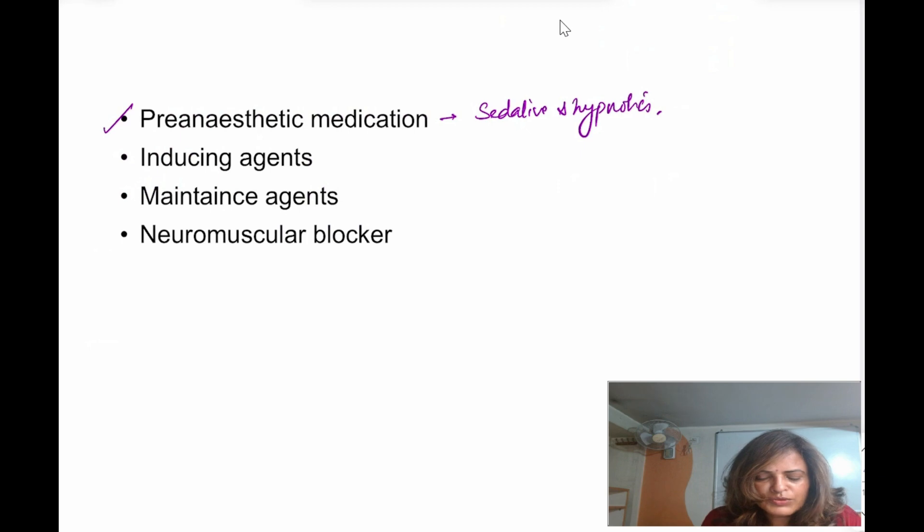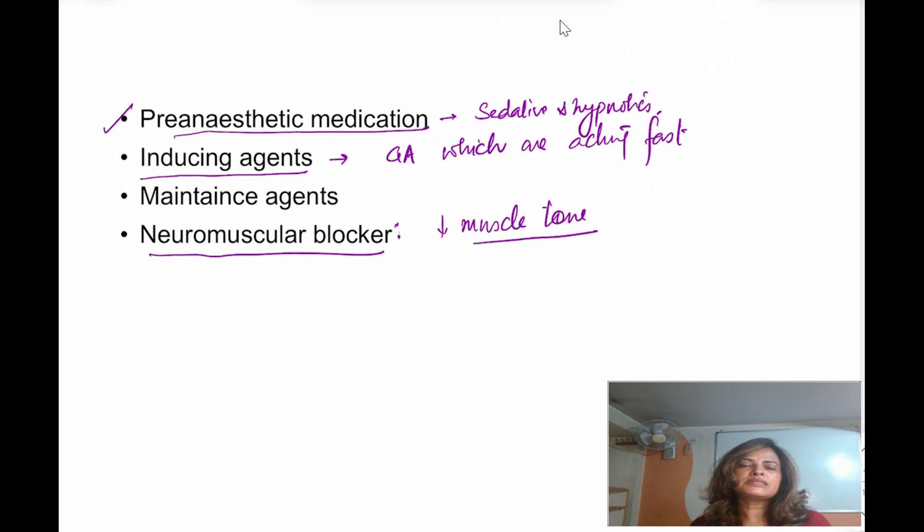Then for the inducing agent, we are using general anesthetics which are acting fast. We use them as inducing agents. For maintenance, slow acting agents. Then neuromuscular blocking agents, these are going to decrease the muscle tone. This is very important, otherwise when the surgeon is going to do the work, the muscle will twitch. Detailed video you can see on the neuromuscular blocker. I will be giving the link for this also in the description box.